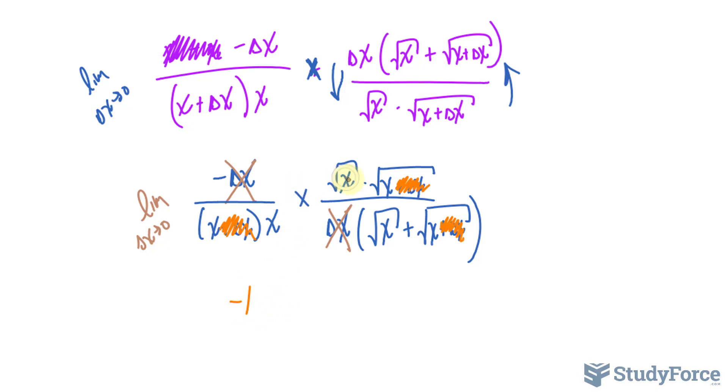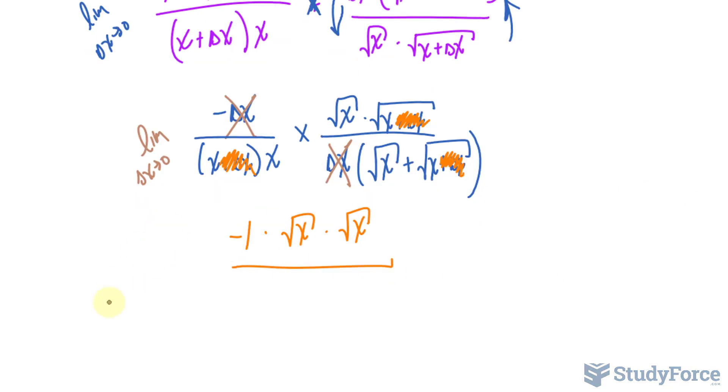And cleaning this up, we have negative one times the square root of x times the square root of x. That's the top part. No need to write down limit anymore. x times x is x squared. Times... What do we have left here? The square root of x plus the square root of x. These two multiply together to become negative x.